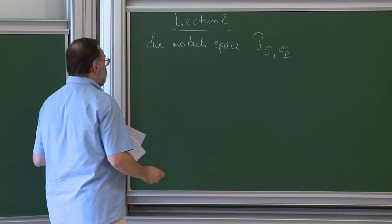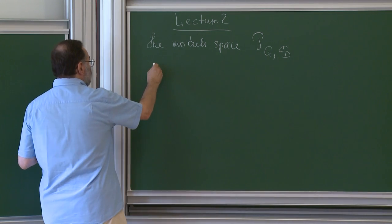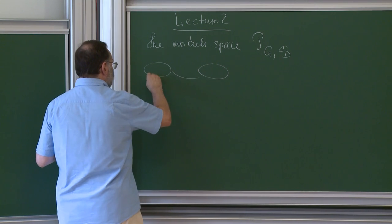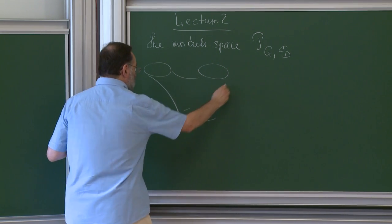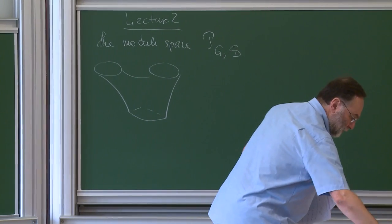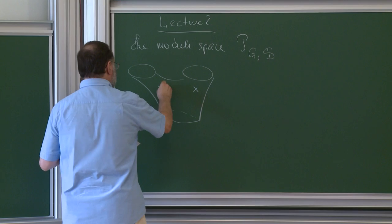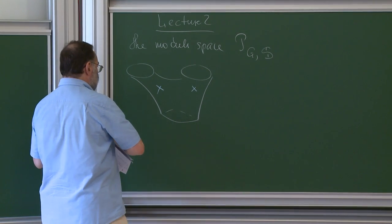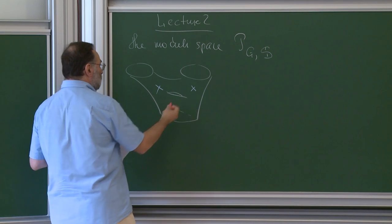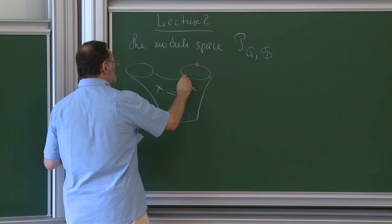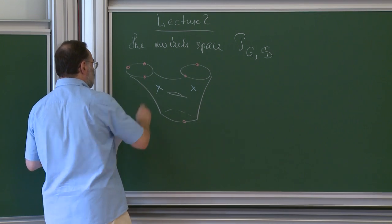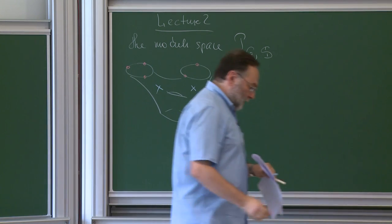Let me remind you what the decorated surface is. It's a surface with holes and punctures — an arbitrary surface with punctures and holes. By default, each hole has at least one special point. These red points are the special points. Everything is considered up to isotopy.